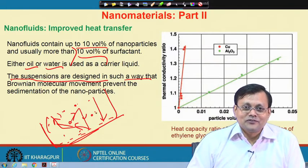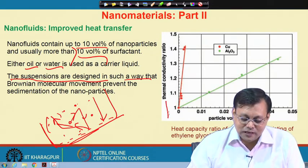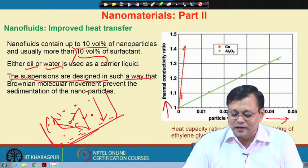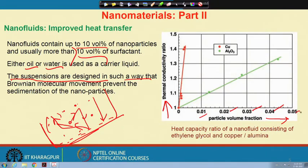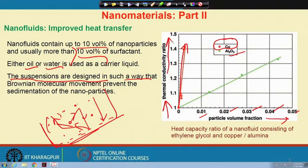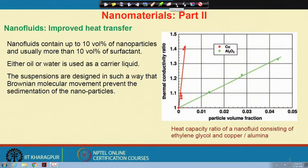Looking at experimentally reported functional properties: thermal conductivity ratio (y-axis) versus particle volume fraction (1–5%). Copper nanoparticles, having better conductivity, increase the conductivity ratio up to ~1.4 (40% increase over base fluid). Alumina nanoparticles similarly increase conductivity. This shows that thermal conductivity can be tuned using the thermal transport of nanoparticles in a nanofluid.